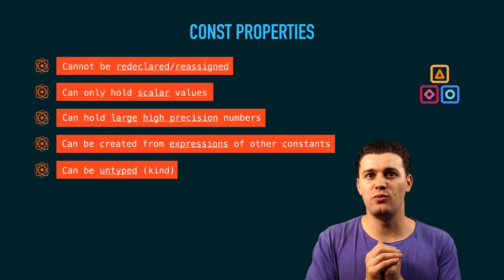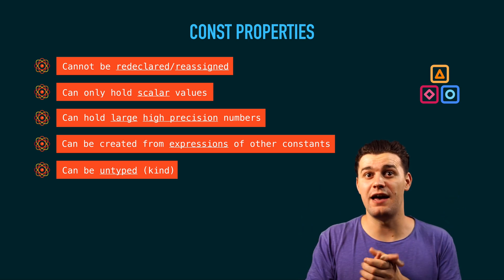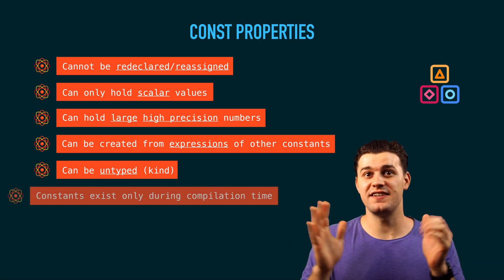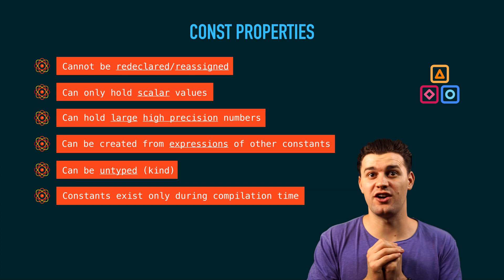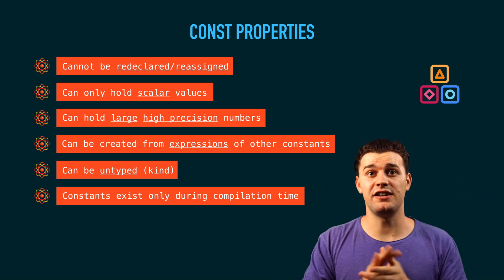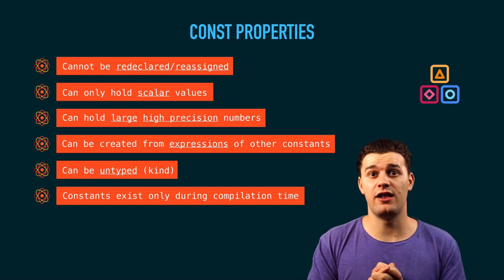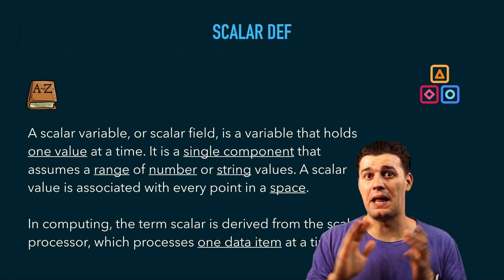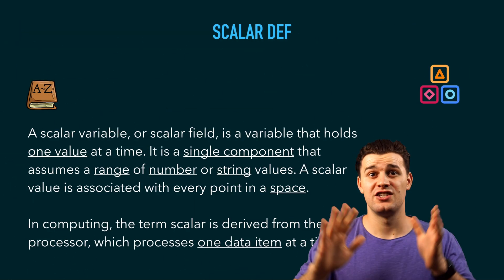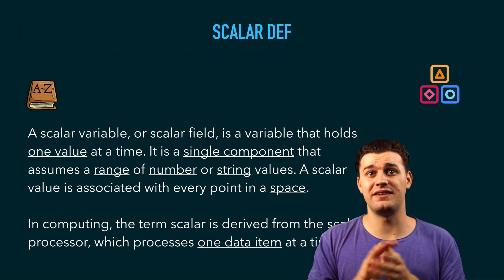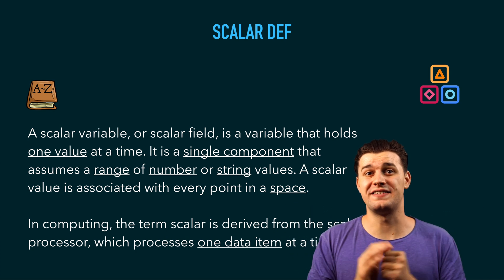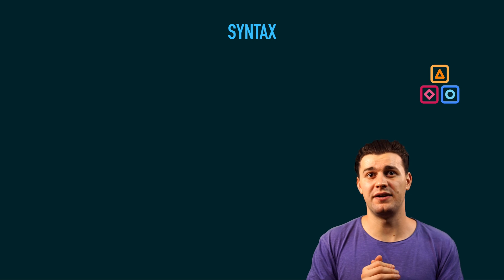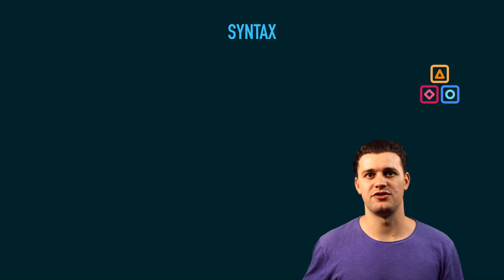Another important thing about constants specific to Go is they can be untyped — or 'kind' — and we're going to talk about that later in the tutorial. Another one which I myself didn't know about until I made this tutorial is that constants exist only during compilation time. A constant value can only be a scalar value — basically a primitive value. Other languages call them primitive values but in Go they're called scalar values.